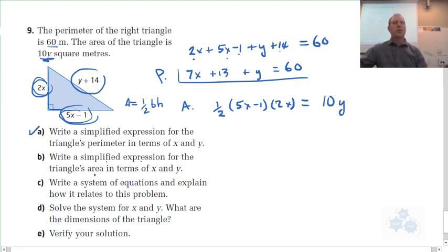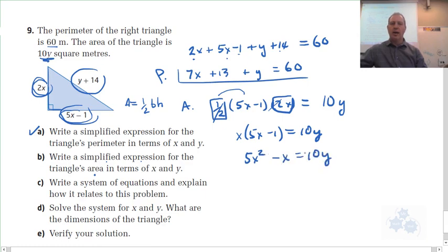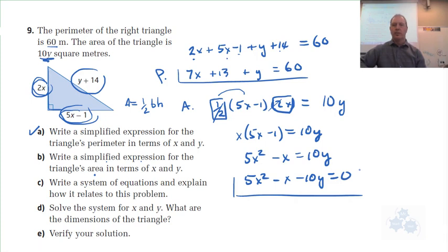So it says the area equals this. So, now listen. When you multiply three things together, you do not always have to multiply the first two things together. You can multiply the first and the third thing together. That's going to be easiest here. Because look at this. 1 half times 2x. That 1 half and the 2 equal 1 when you multiply them. So, this is just x times 5x minus 1 equals 10y. And if we kind of distributed this a little bit, then we would have 5x squared minus x equals 10y. Or 5x squared minus x minus 10y equals 0.